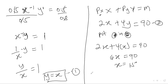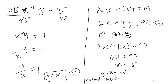And since y equals x, y also equals 15. So the optimal values are x equals 15 units and y equals 15 units.